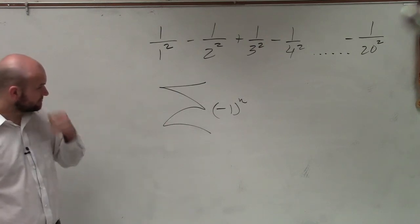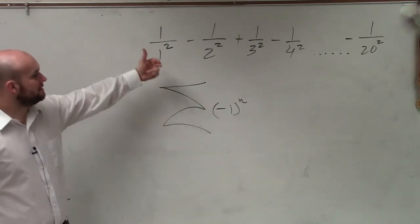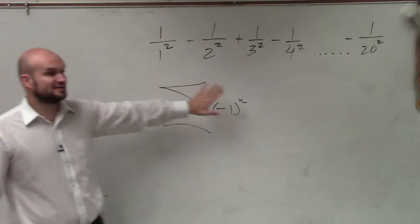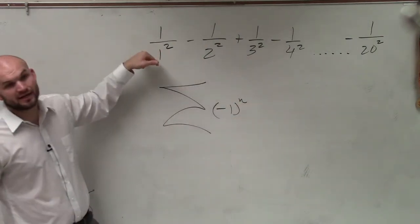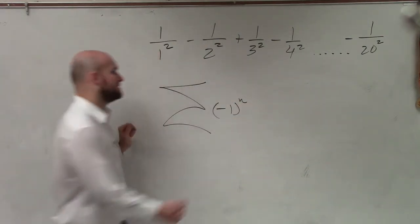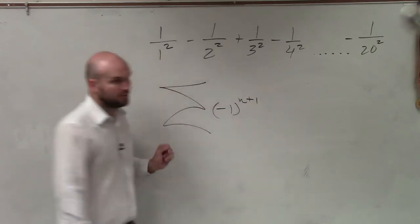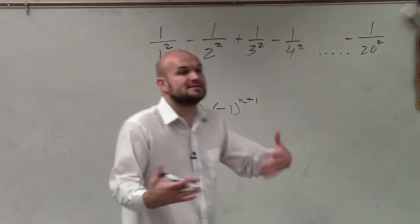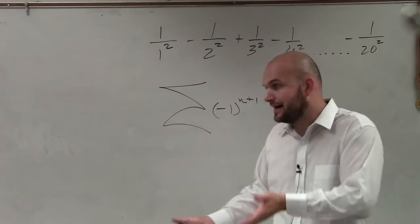So now, we look at this and we say, all right, first of all, alternating signs. Now, if this alternating sign we're going to start at 1, this would be negative, right? But since this is positive, I'm going to add 1. So now, that's going to make the first term even, the second term odd.